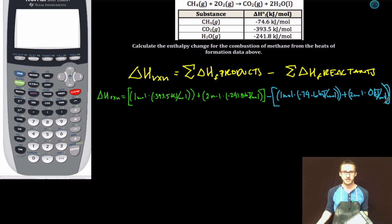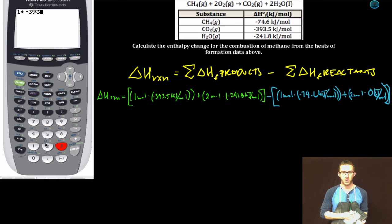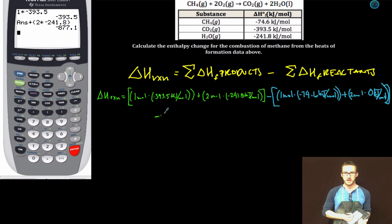Then it's just a quick jump to your calculator. One times negative 393.5 plus two times negative 241.8. Negative 877.1 kilojoules. Sum of the enthalpy of formation of my products.